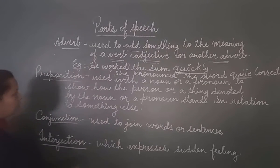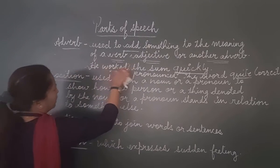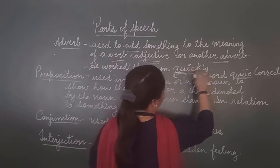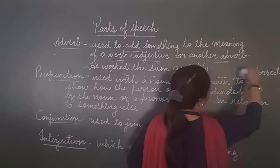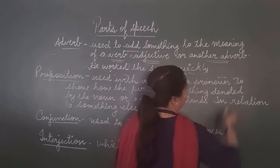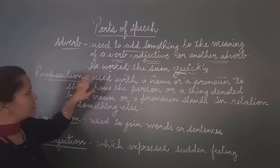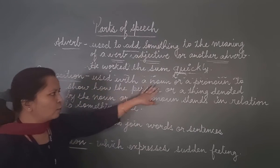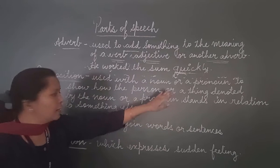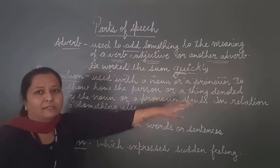Now let's see the next part of speech, which is a preposition. What is the definition of a preposition? A preposition is a word which is used with a noun or a pronoun to show how the person or thing denoted by the noun or pronoun stands in relation to something else.